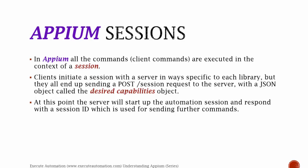The client initiates a session with a server in a way specific to each library, but they all end up sending a post-session request to the server, with a JSON object called as the desired capabilities object. At this point, the server will start up the automation session and respond with a session ID, which is used for sending further communication. This is very important to understand how Selenium actually works, because this Appium session is what makes Appium perform the operation well enough.